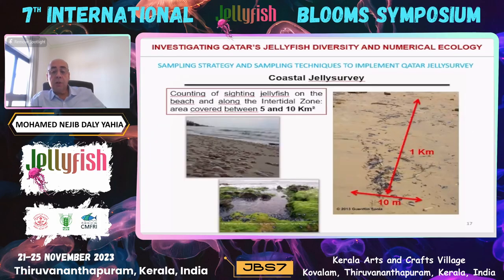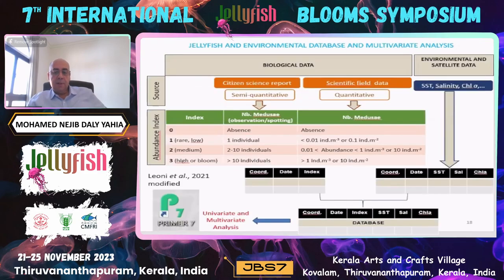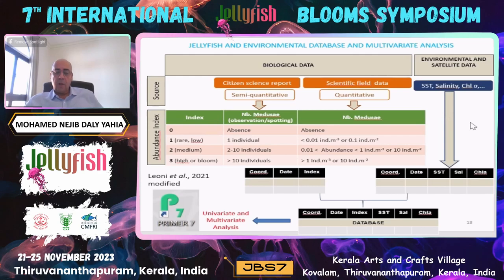For the coastal jelly survey, we count the jellyfish stranded on the beach or along the intertidal zone, covering between five to ten square kilometers. Once we have all these quantitative or semi-quantitative data — combined with citizen science reports and social media — we integrate all these data to create a kind of abundance index based on the previous work of Léoni et al. 2021. We also build an environmental and satellite dataset to understand the drivers of the blooms.